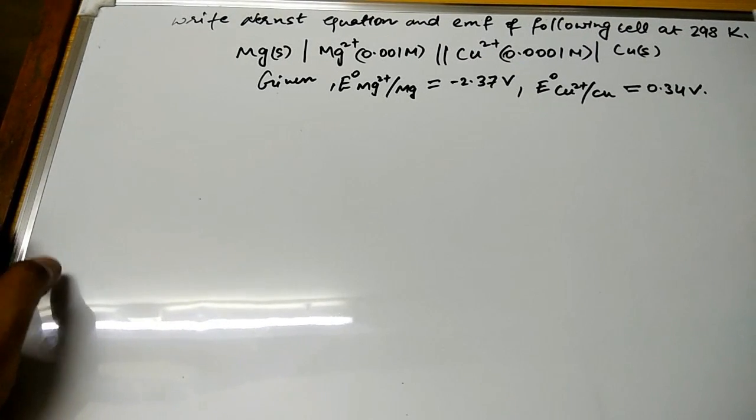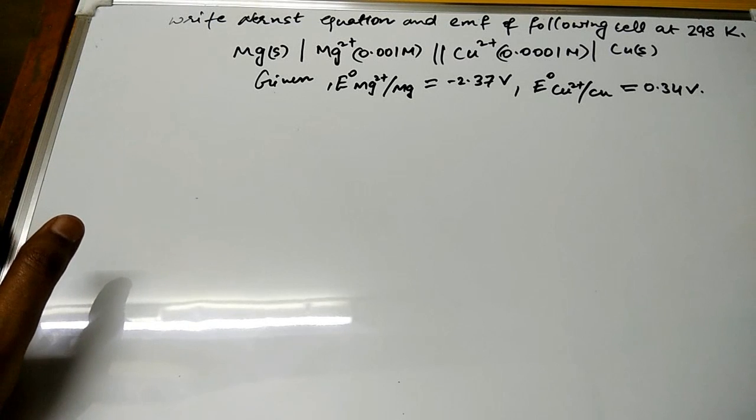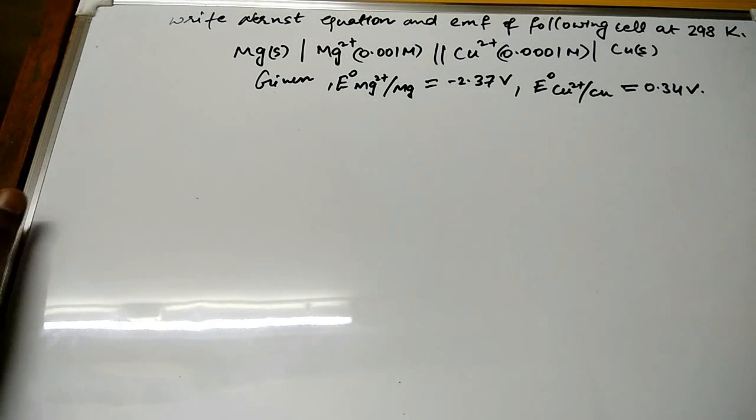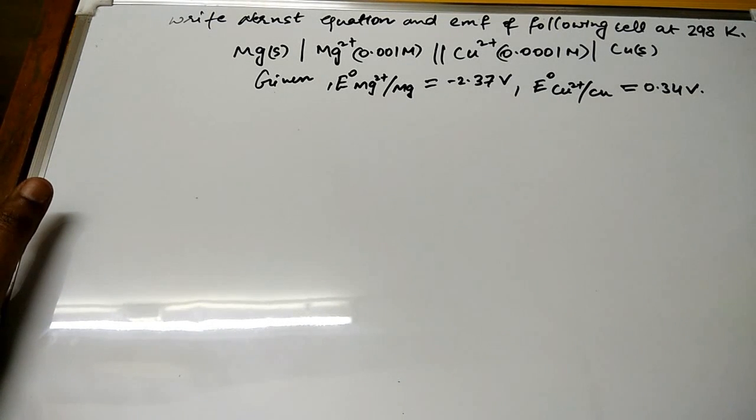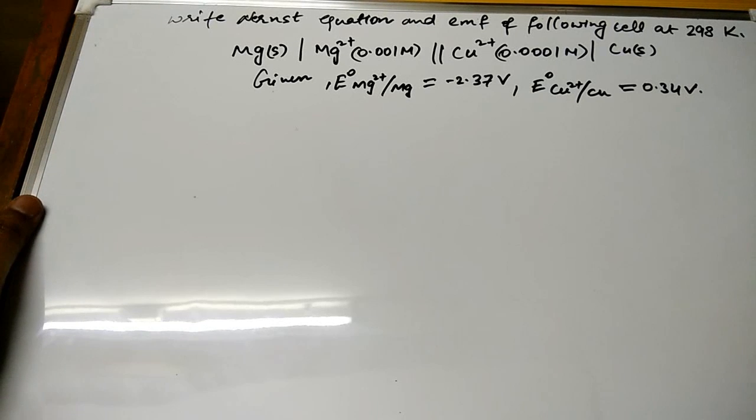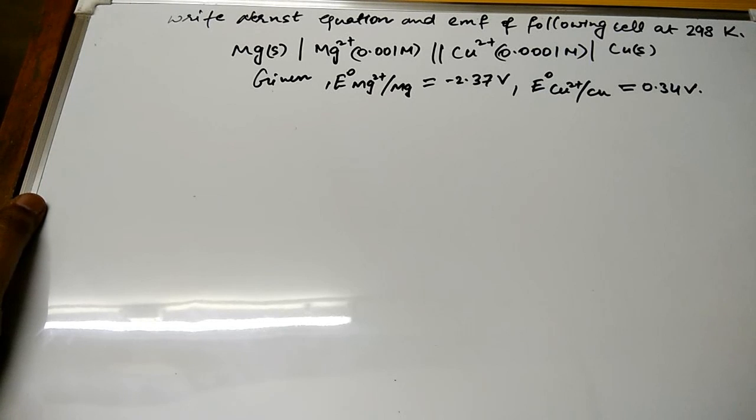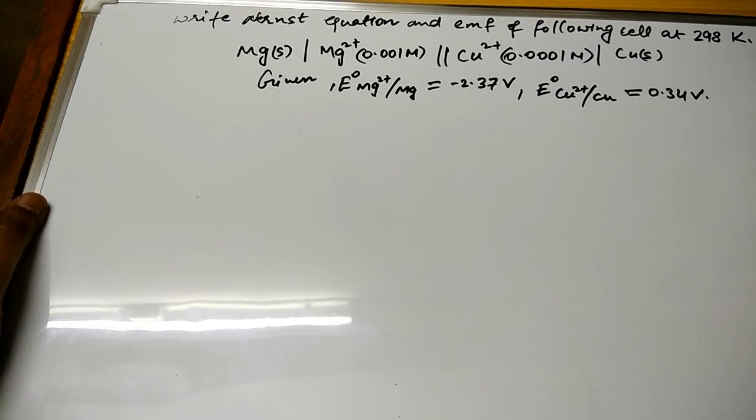So this is the whole question. Once again let me dictate the question: write Nernst equation and EMF of following cell at 298 Kelvin and cell reaction is given. Also the values of E° Mg²⁺/Mg and E° Cu²⁺/Cu are given, which are in volts.